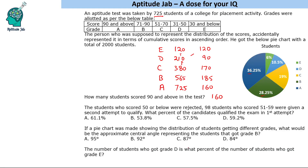One of the questions: the number of students who got grade B is what percent of the number of students who got grade E? So 90 by 120 — that is 75%. This could also have been answered by taking the difference using 4.5% and 6%, giving 75%.